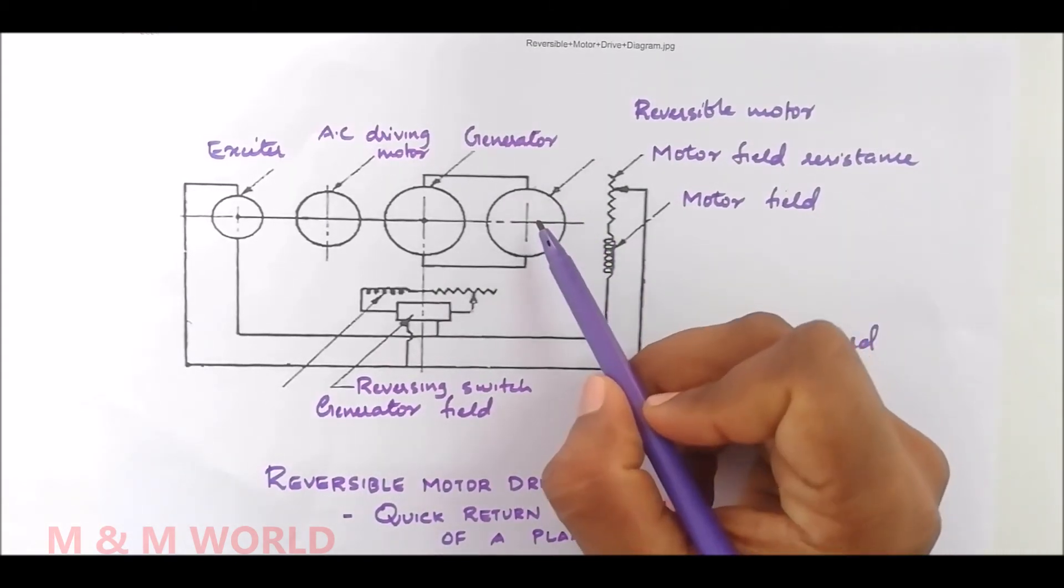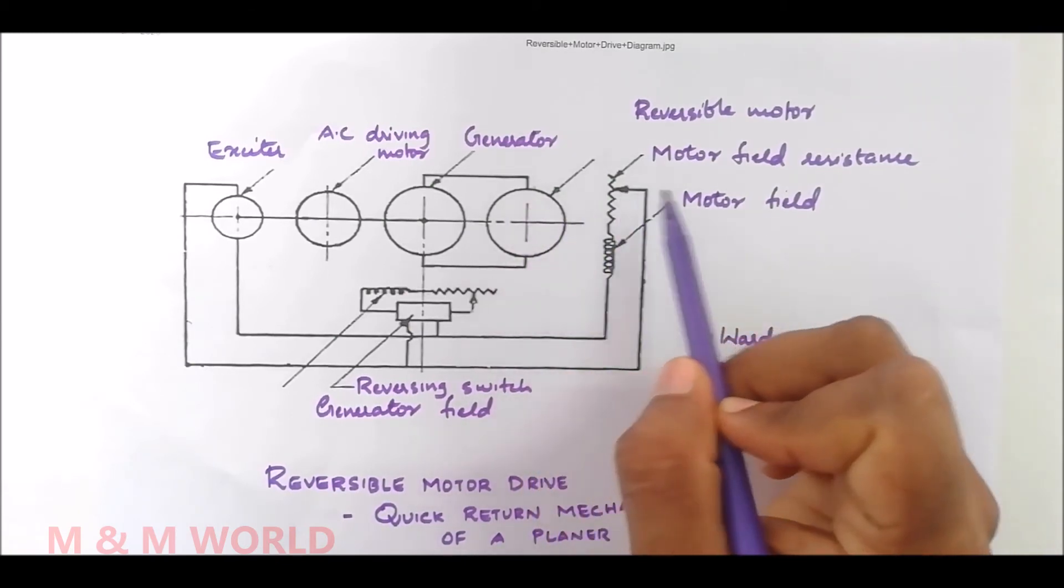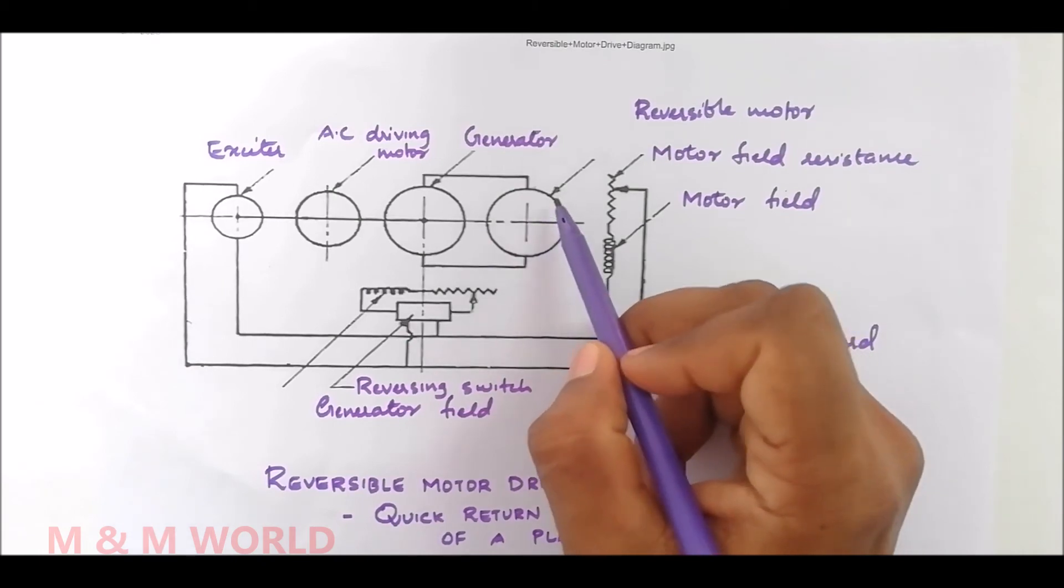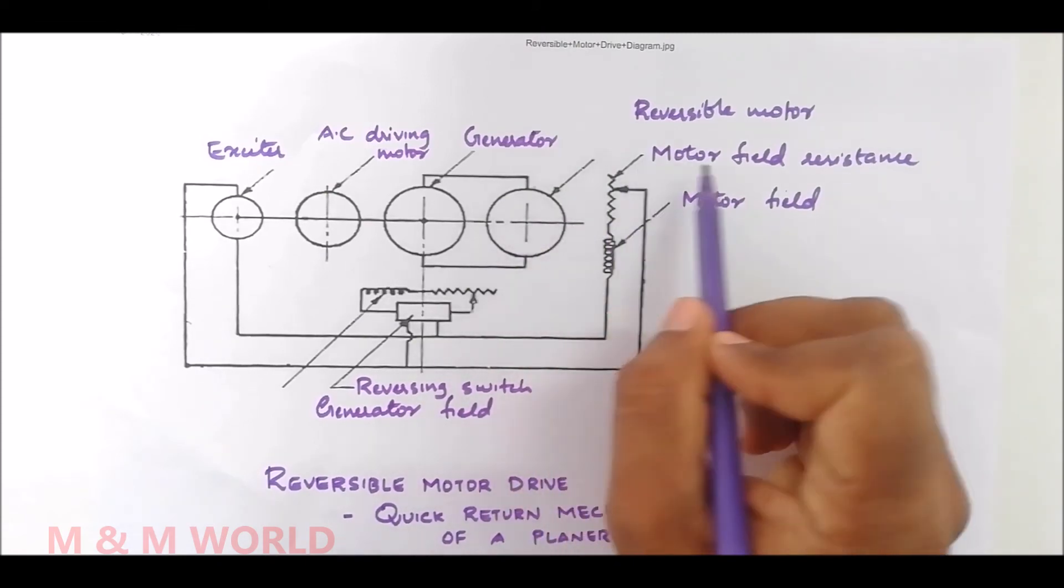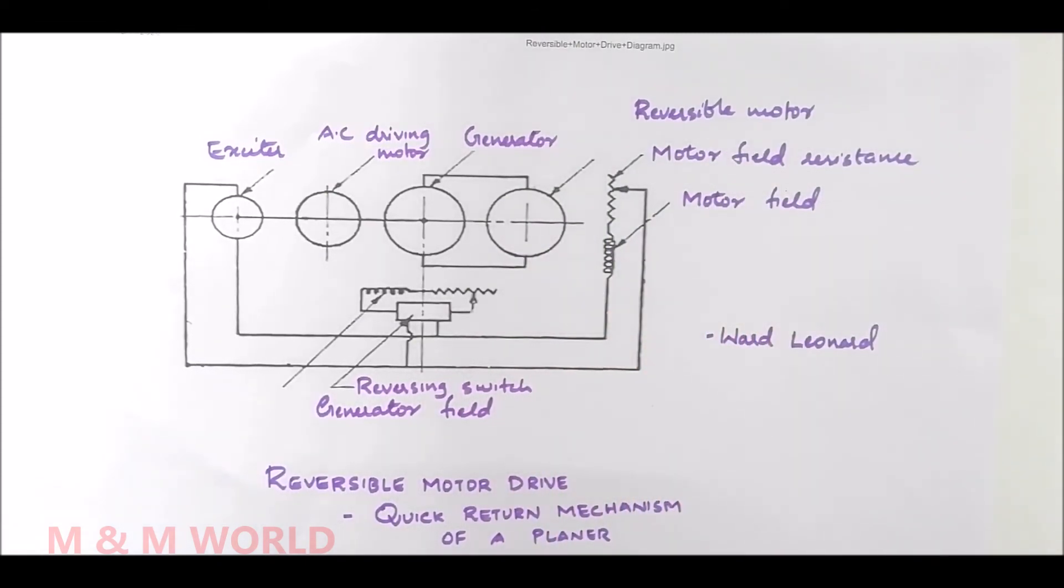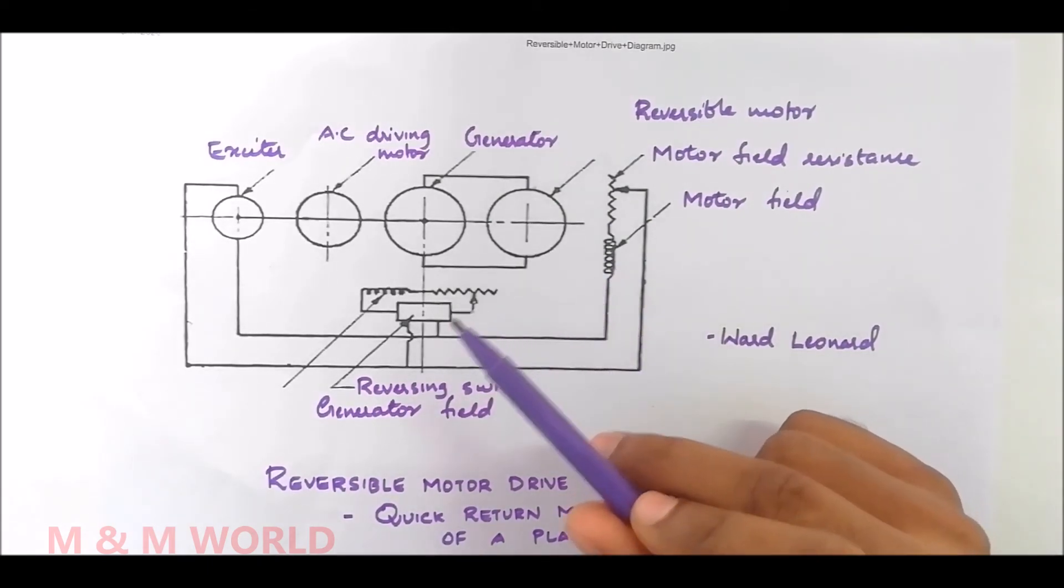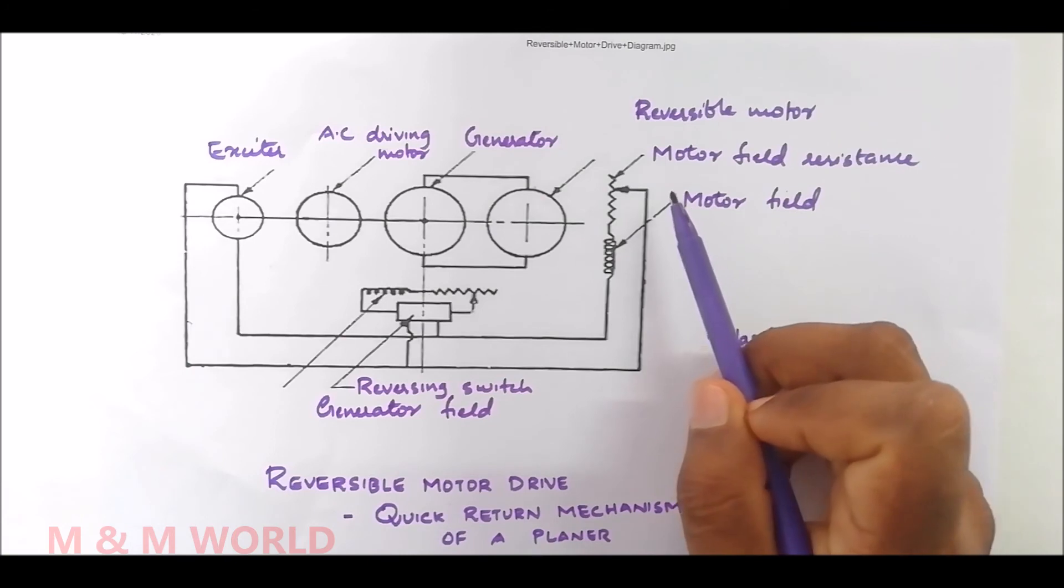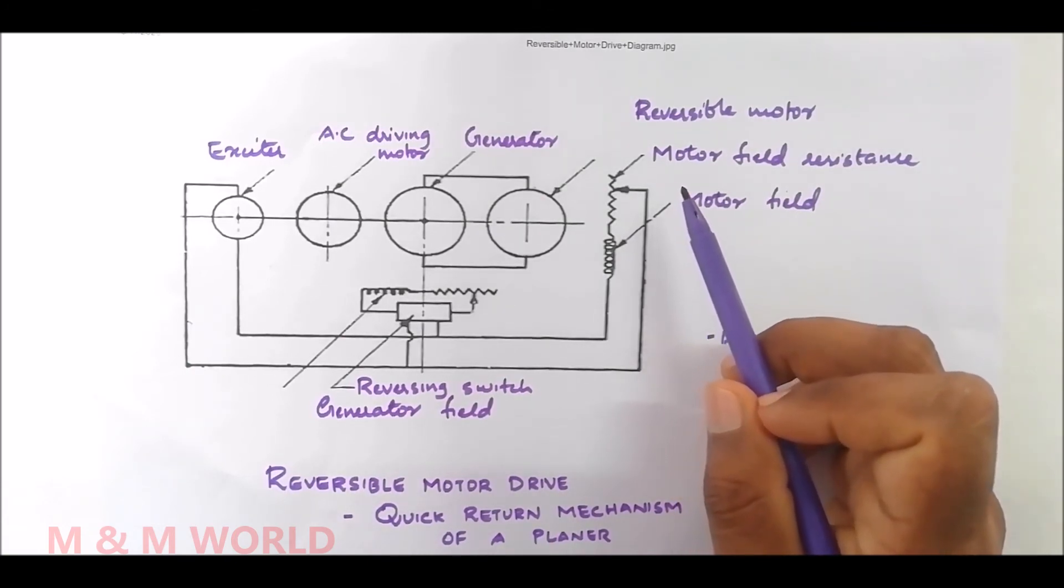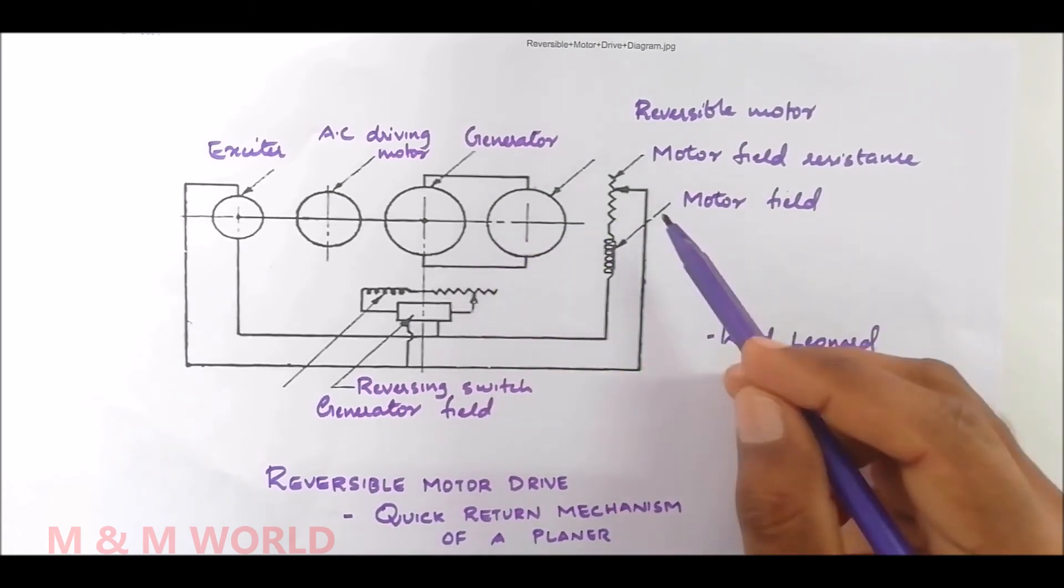This causes the motor to rotate in opposite direction, causing the planer table to reverse. The speed during cutting stroke may be made slower than the return stroke by regulating the field current of the generator and the reversible motor with the help of resistance.